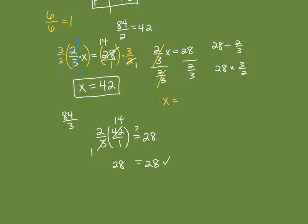Our answer is correct: 28 equals 28. Remember, when you have a fractional coefficient — a fraction multiplied by the variable — multiply by the reciprocal instead of dividing by the fraction. You're technically doing the same thing, but it's much easier. You'll have more success starting that way from the beginning. That's it for solving one-step equations. I've got some extra practice problems you can work on, and you can let me know if you need any additional help. Thanks for watching.